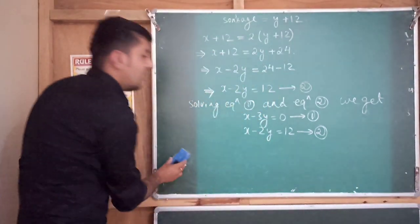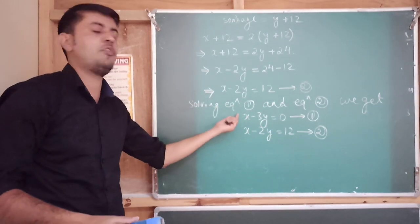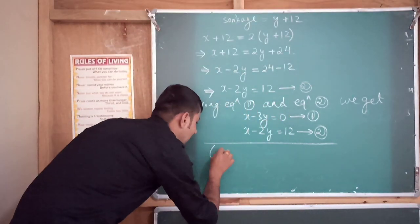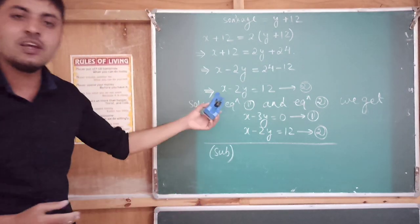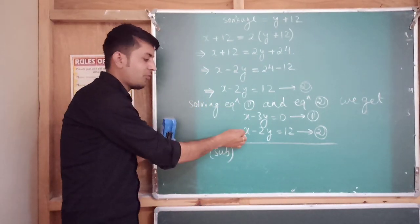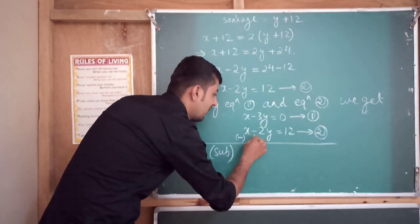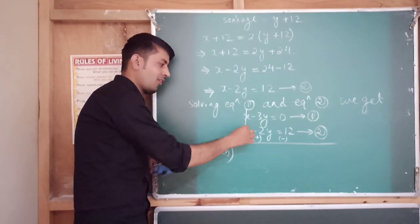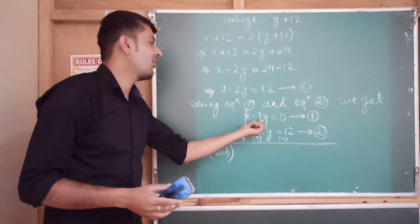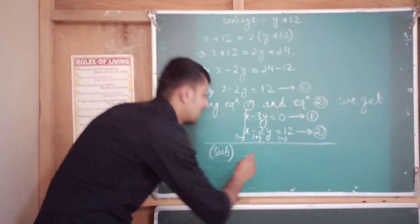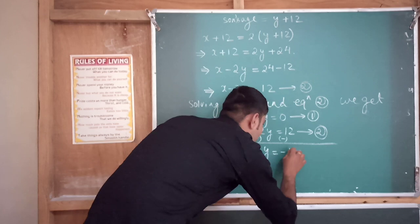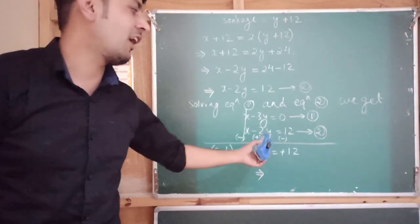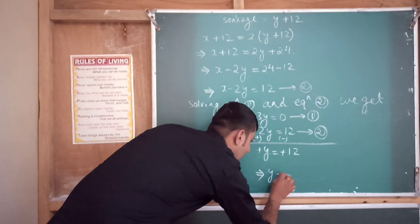It is very easy. The coefficient of x is 1 in both equations, so we can directly subtract. When you do the subtraction, x minus x is 0 — cancel. Then minus 3y plus 2y gives minus y. Minus y is equal to minus 12, and the negatives cancel. So the value of y is equal to 12.